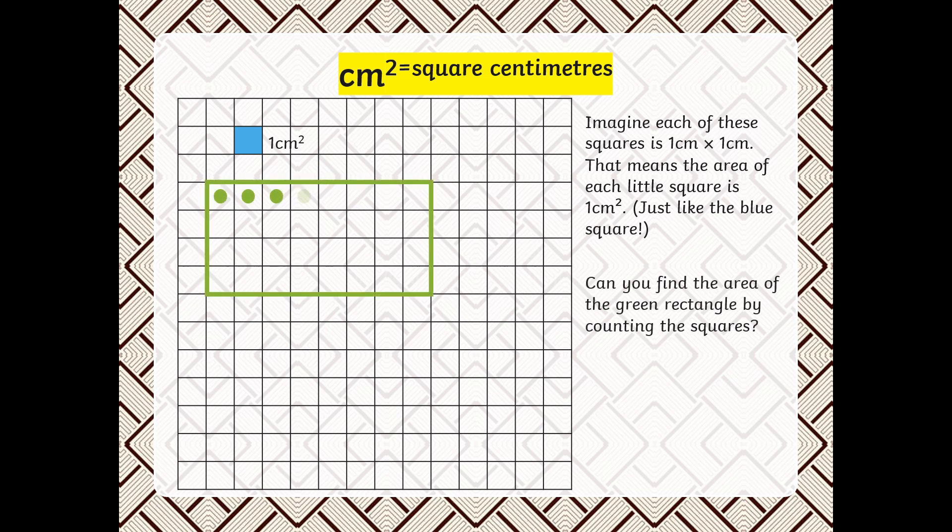Can you find the area of the green rectangle by counting the squares? The area of the green rectangle is 32 square centimeters.